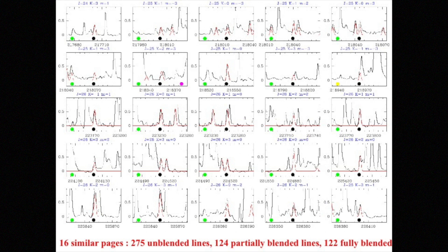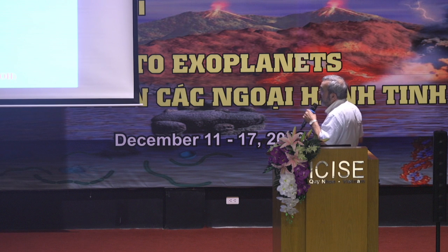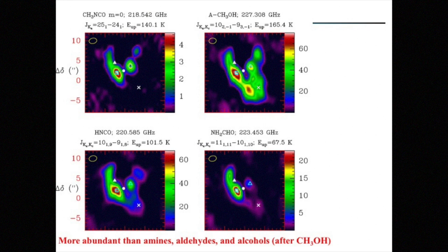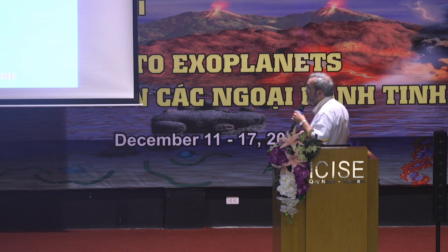Methyl isocyanate is one of the most abundant molecules containing H, N, C, and O, and we still don't know how it is produced — not even using grain surface chemistry. We can learn a lot using ALMA and other interferometers by looking at the spatial distribution of related species such as methanol, methyl isocyanate, HNCO, and formamide. A surprise is that for each molecule or family of molecules, you have a different spatial distribution, meaning that chemistry — and in particular time — plays an important role in the composition of different molecular clouds.